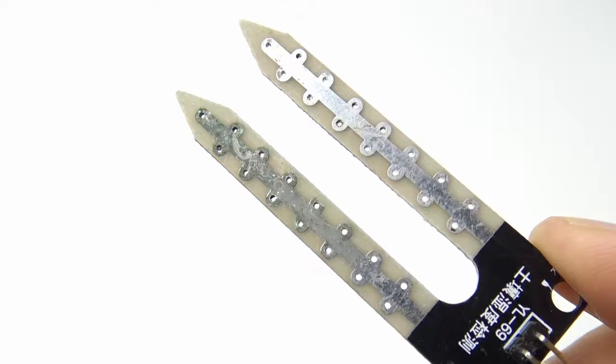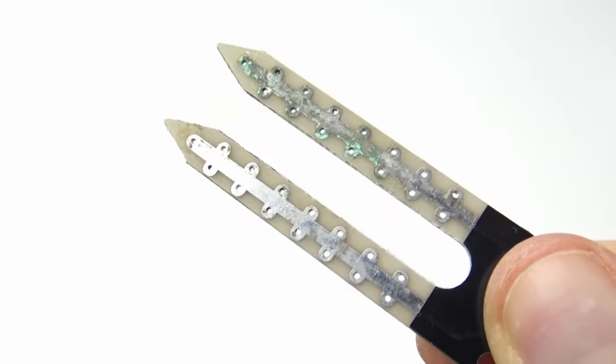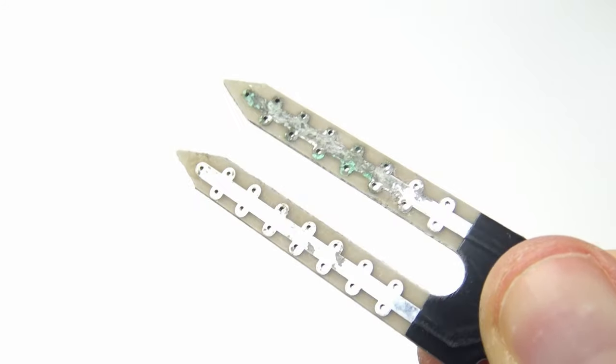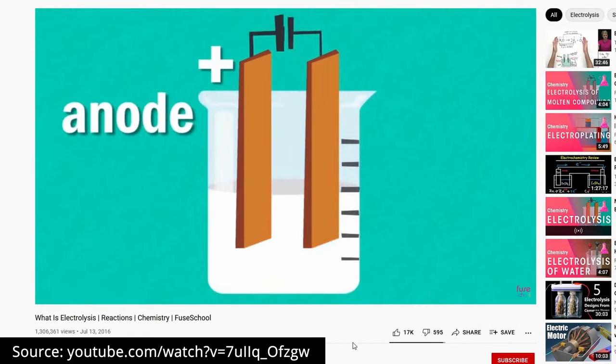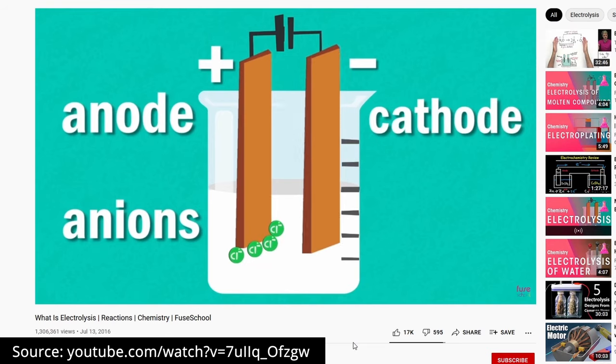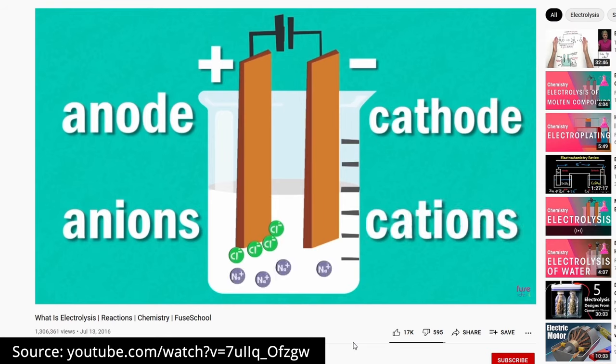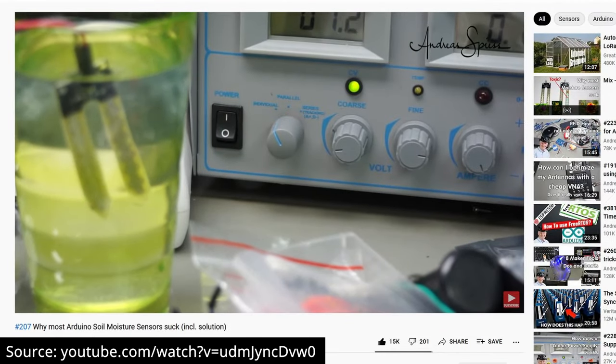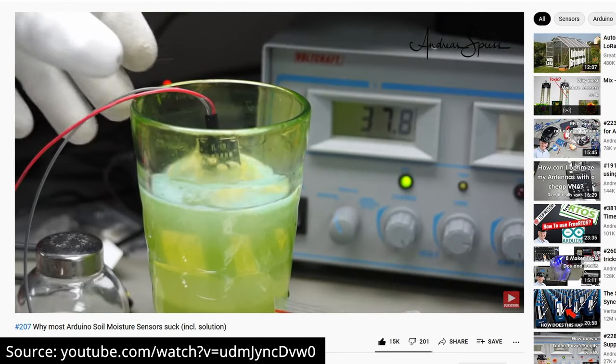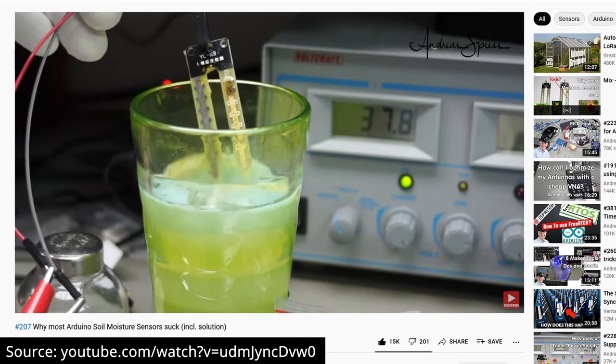Resistive soil moisture sensors suck because they destroy themselves quickly after only a few days of operation. This is because a chemical reaction called electrolysis takes place when the sensor legs with their exposed copper paths are stuck into the ground and power is supplied to the sensor. As a result, the copper on the cathodic sensor leg is quickly dissolved while gases are being produced, as shown in Andreas Spiess's video at high speed.